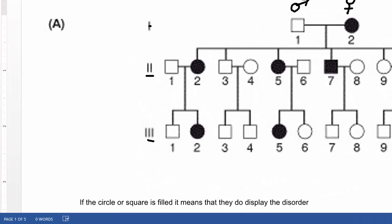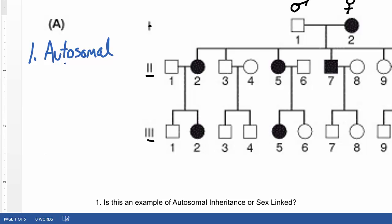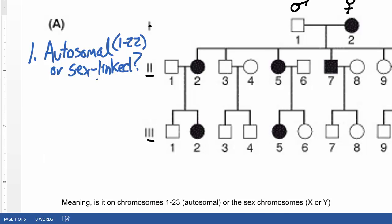I would like you to answer three specific questions. First of all, ask yourself, based on what you're looking at in the pedigree, is this autosomal inheritance or sex-linked, meaning is it on chromosomes 1 through 22 or is it on the X or Y chromosome?